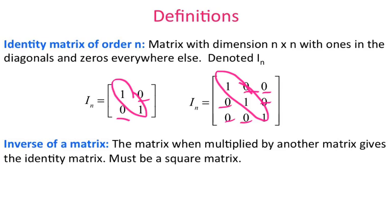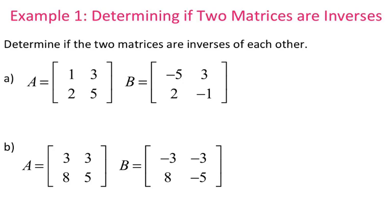The identity matrix is used to verify that two matrices are inverses of each other. The inverse of a matrix is the matrix when multiplied by another matrix gives you the identity. And just like with the identity, it must be a square matrix. The first example is just checking to see if two matrices are inverses of each other. I have matrix A and matrix B, and I want to see if they're inverses by taking their product.